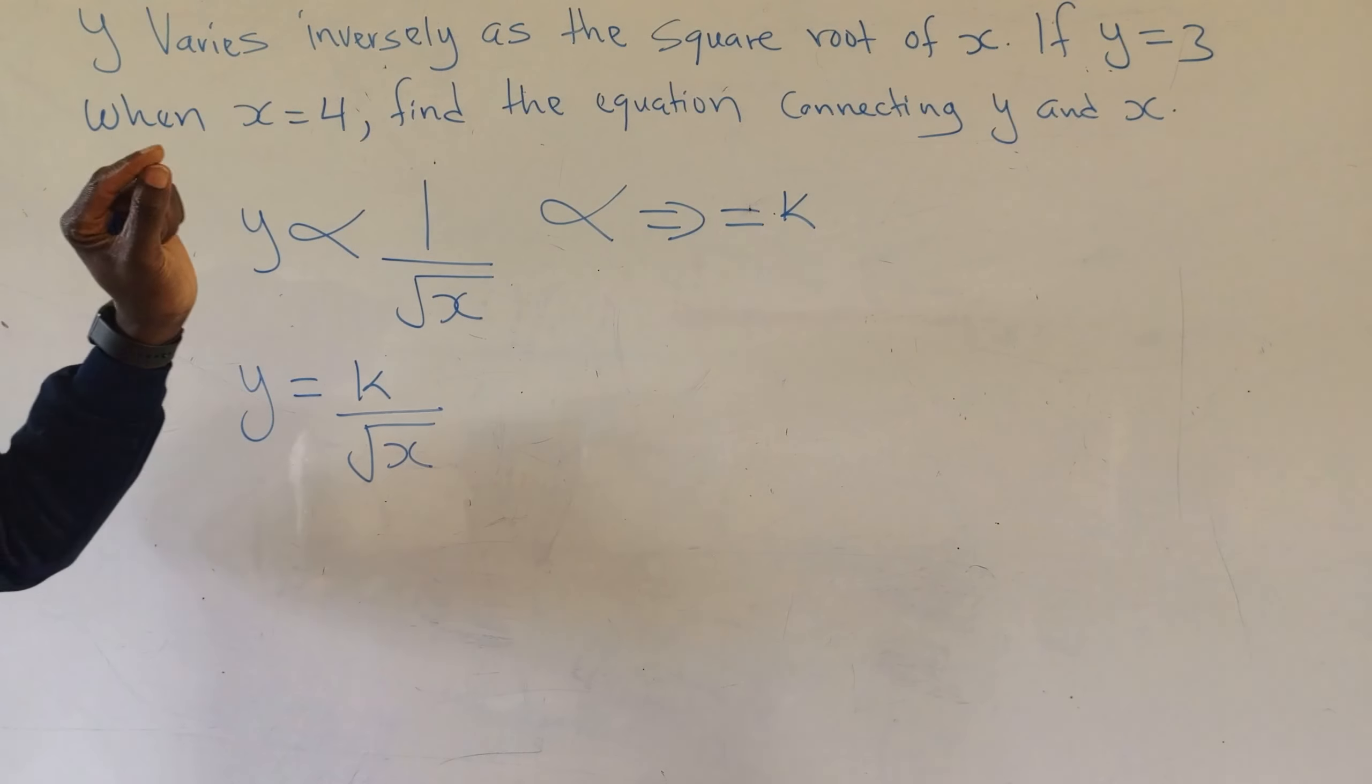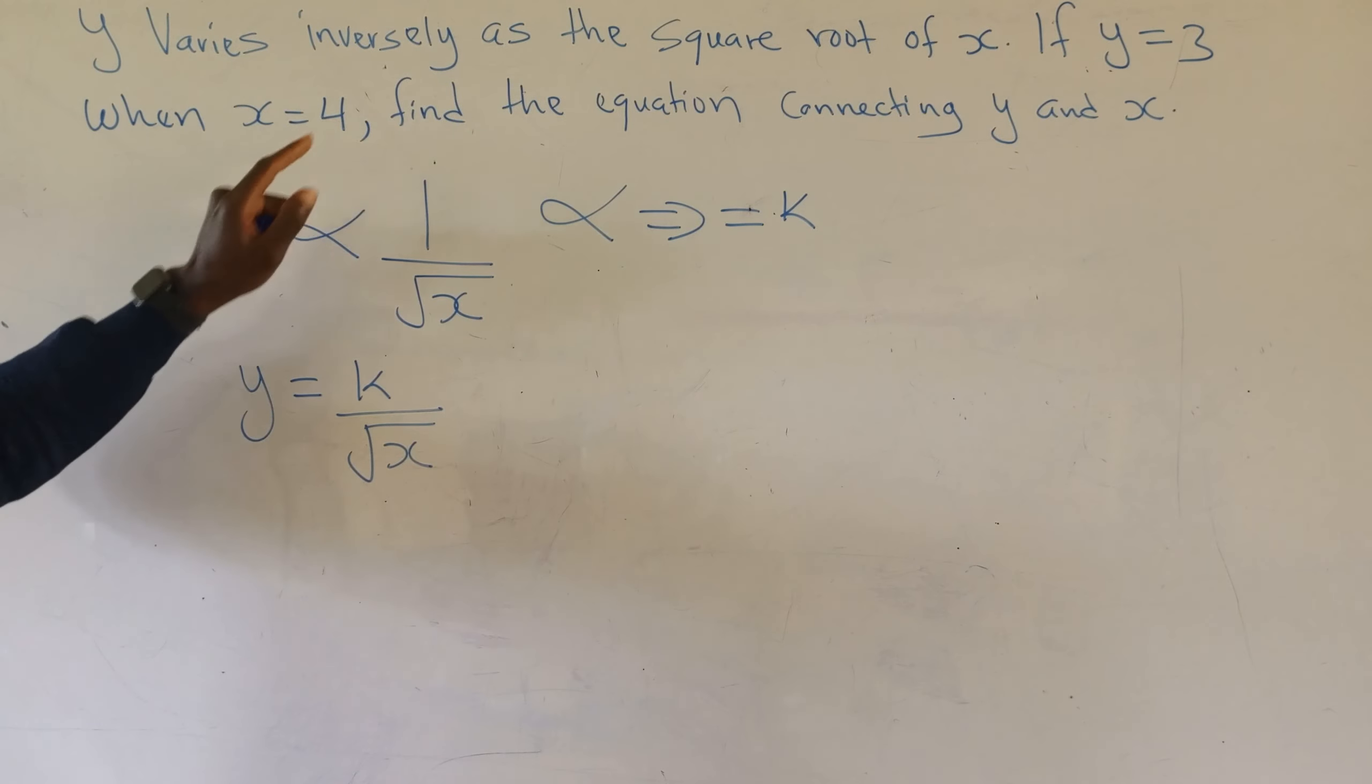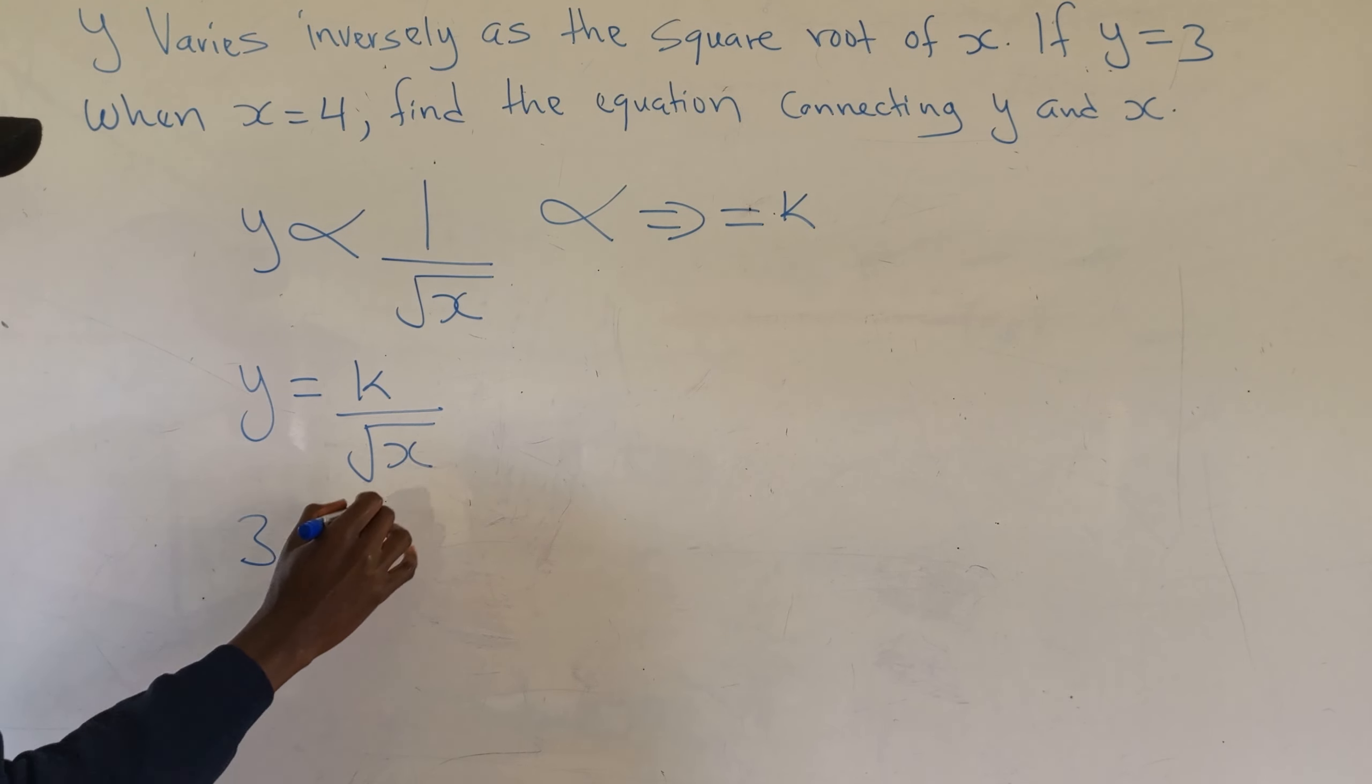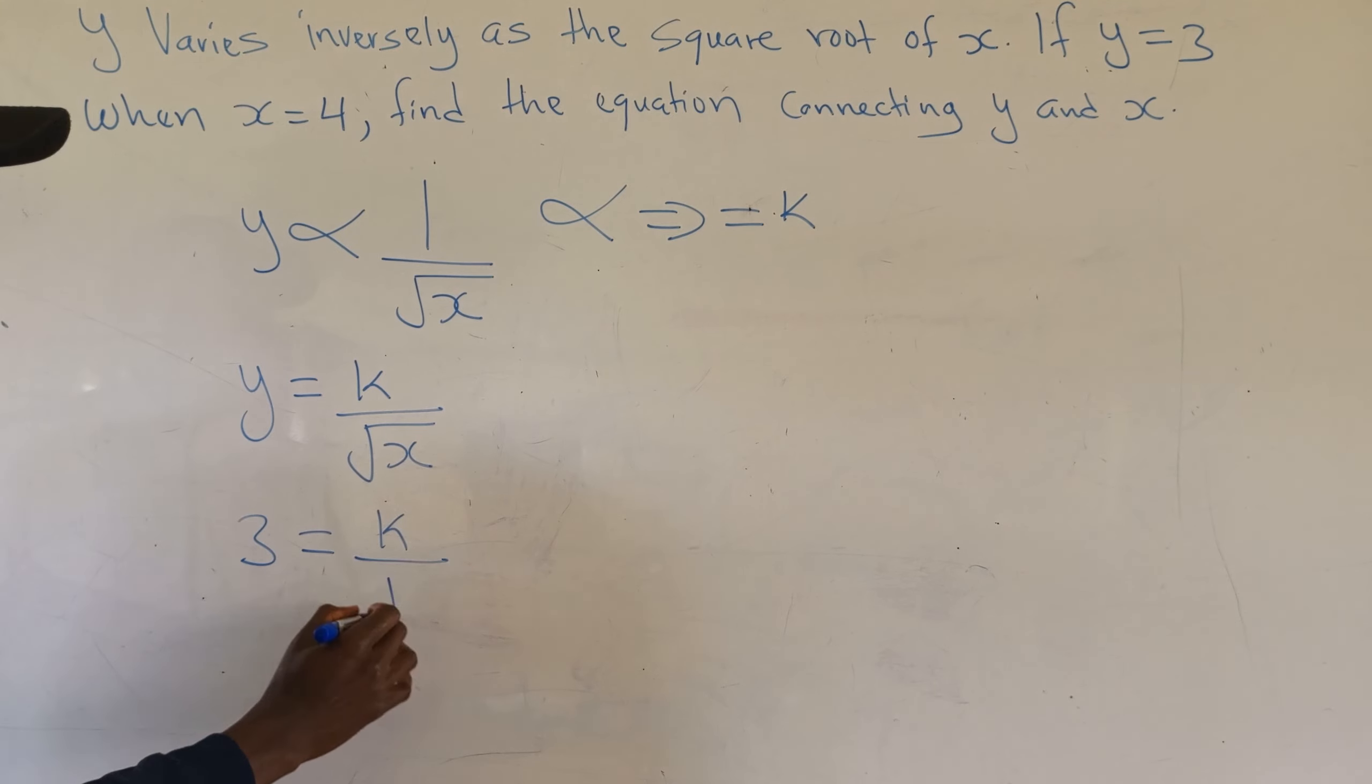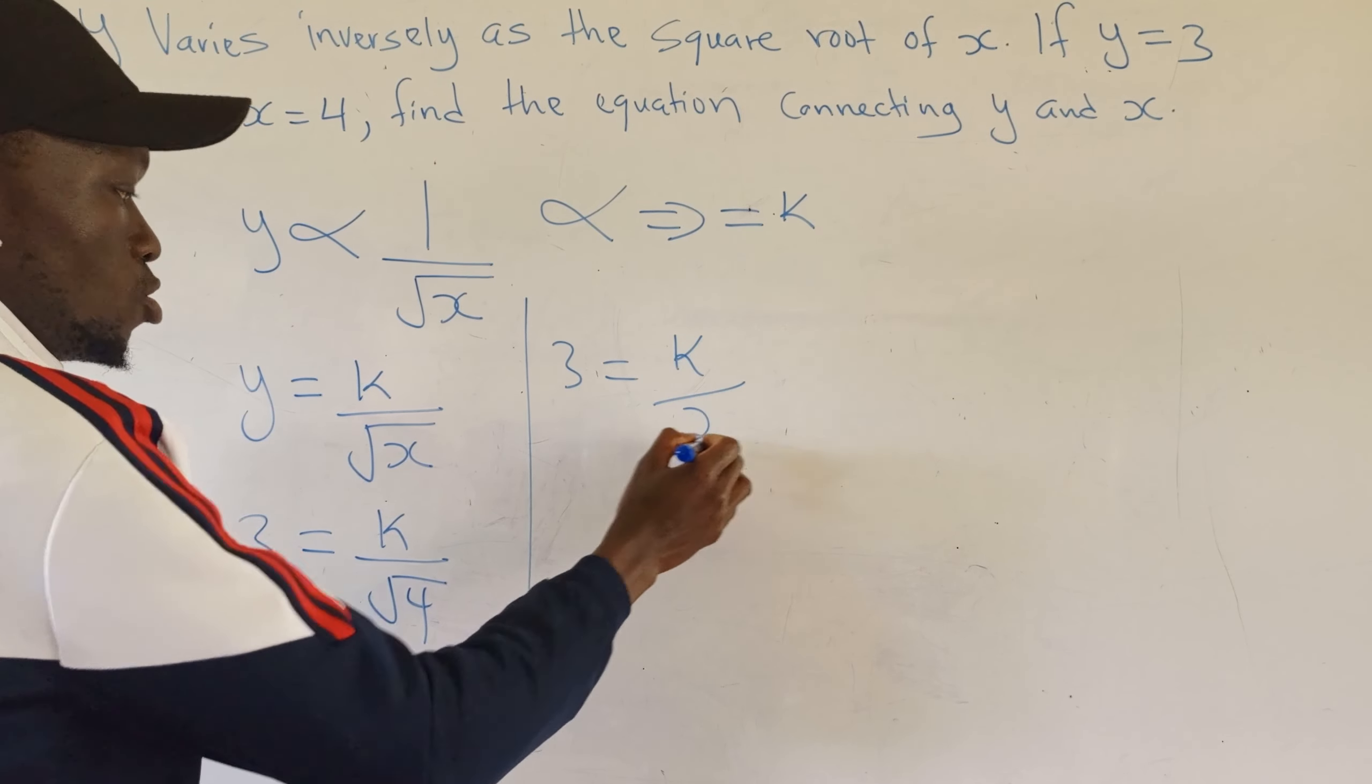So now, we've been told that if y is 3, x is 4. So we need to find k. That's what we're trying to do, that's why I've been given those two values. So if this one is 3, it equals k divided by the square root of 4. So this will be 3 equals k divided by 2.